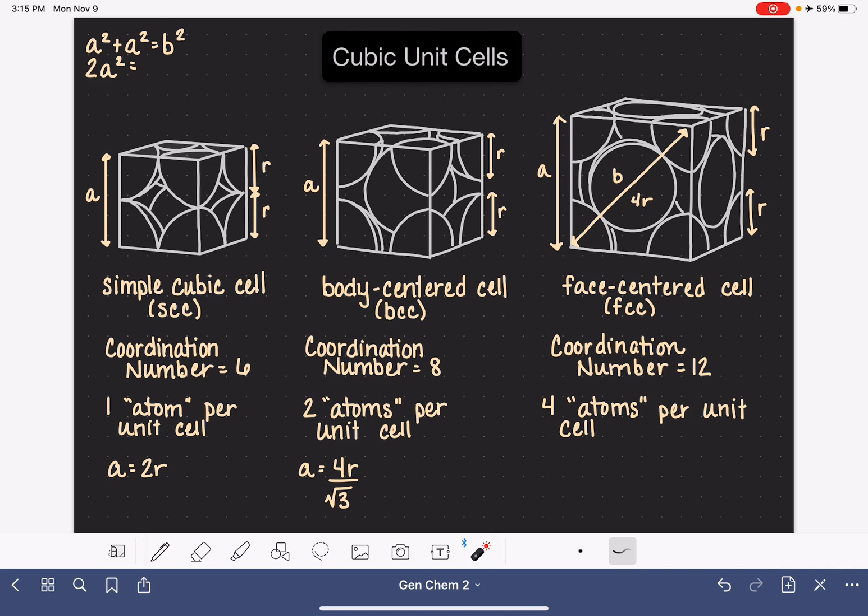And also, instead of saying B squared, because we want to put this in terms of the radius, let's say 4 radius, which is that distance, 4R squared.